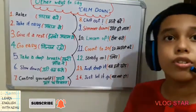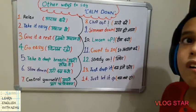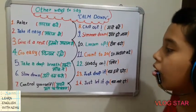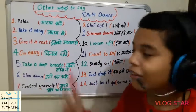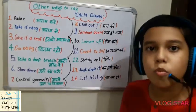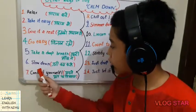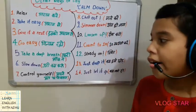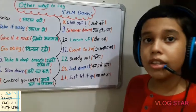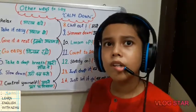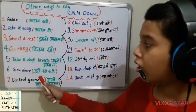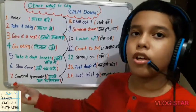I missed one phrase, so let's look at it too. The sixth phrase was 'slow down.' 'Slow' means slowly, and 'down' means lower, so the Hindi translation is 'gati kam karo' — meaning reduce your speed or slow down.